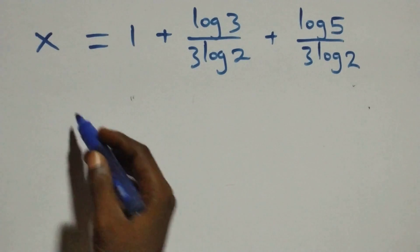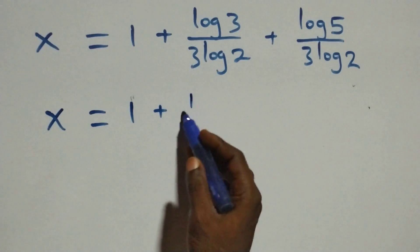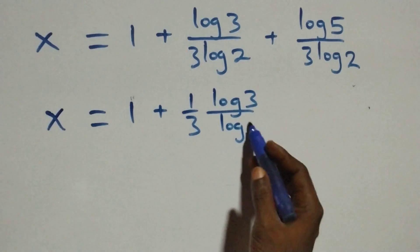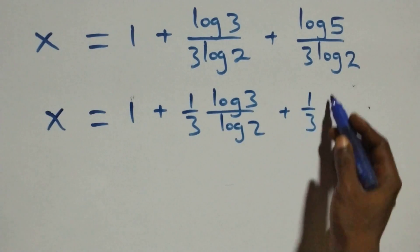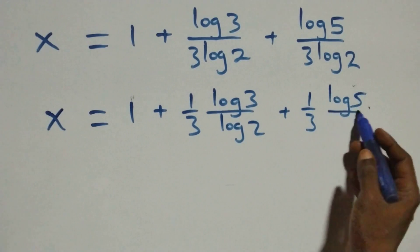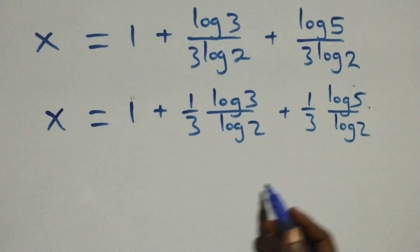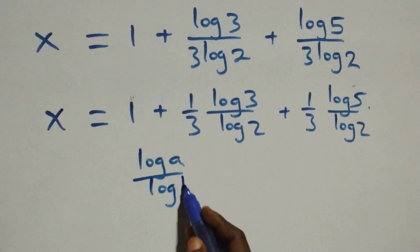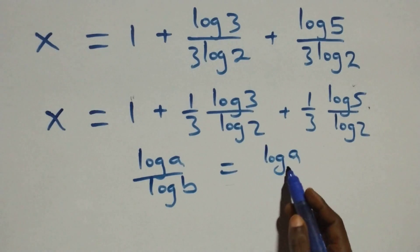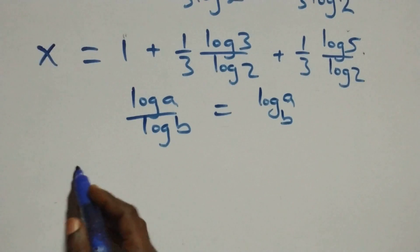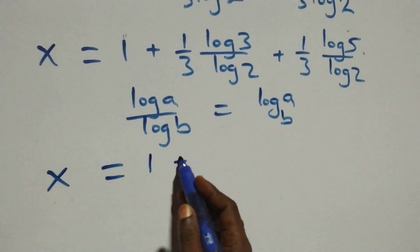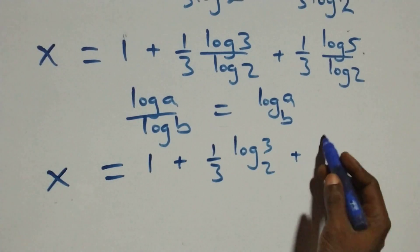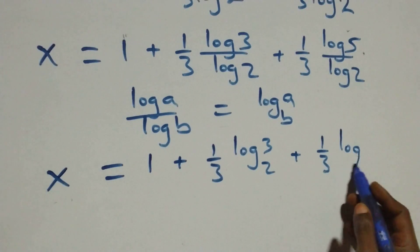We can write this as x equals 1 plus one-third times (log 3 over log 2), plus one-third times (log 5 over log 2). Applying the change of base formula — when we have log a over log b, this is the same as log a to base b — what we have becomes x equals 1 plus one-third log₂3, plus one-third log₂5.